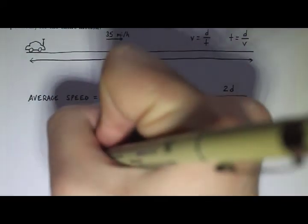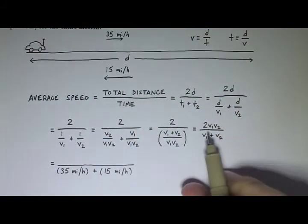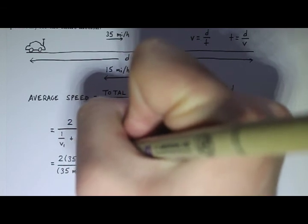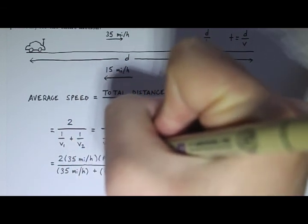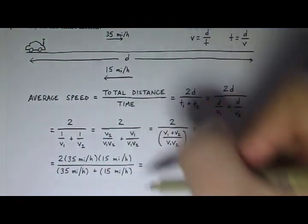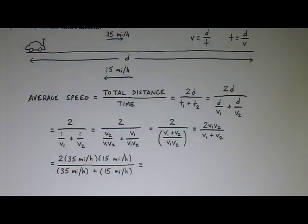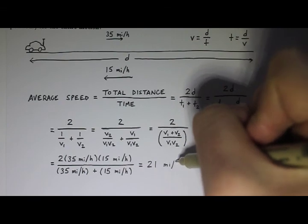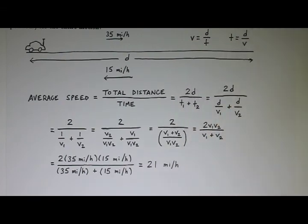And then up top here, we have 2 times V1, V2. So that's 2 times 35 miles per hour times 15 miles per hour. And if you think about it, the units work out so that your final answer is in miles per hour. And if you do this on the calculator, you end up getting 21 miles per hour. And that's your answer.